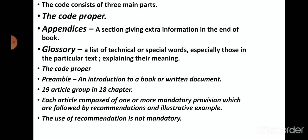The ICZN code book consists of three main parts: the code proper, the appendix, and the glossary. The appendix is a section giving extra information at the end of the book. The glossary is a list of technical and special words, especially those in the text, explaining their meaning. When we cannot find the proper meaning of a word in the text, we use the glossary to easily find its meaning.